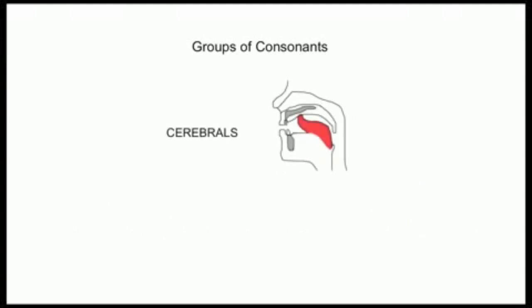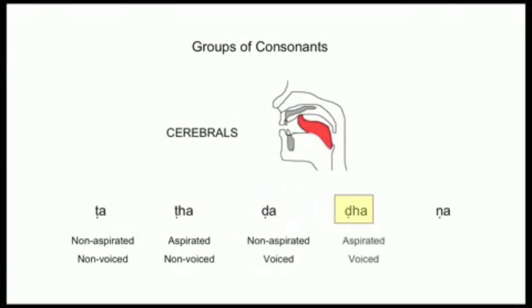The next group are called cerebrals, where the tongue seals the breath behind it by arching up firmly against the roof of the mouth. The cerebrals have a very hard and sharp sound and they are all represented by letters with a dot beneath them. This is how they go, t, th, d, dha, nha. I'll go over them one more time, t, th, dha, dha, nha.